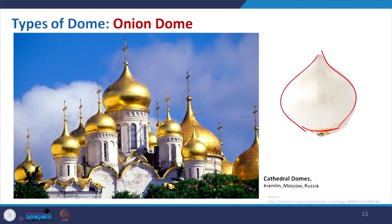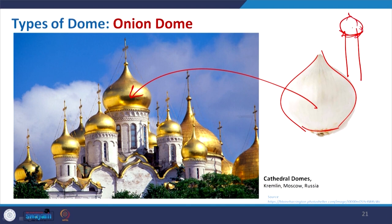Coming to the onion dome — the easiest to remember. We all know the onion and the shape is something like this. I placed it here; earlier I gave the example of Taj Mahal, which has this form. Even in Disneyland you get these towers with this form, and we have seen it in Aladdin or Disney movies. This shows the catalytic domes from Russia where the form is easily visible — like a golden onion.